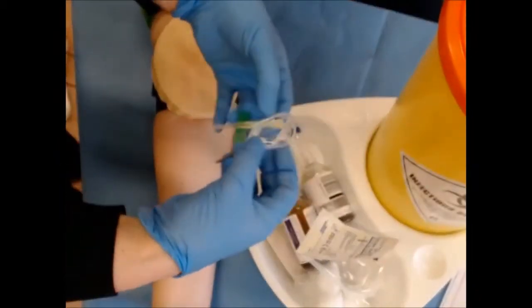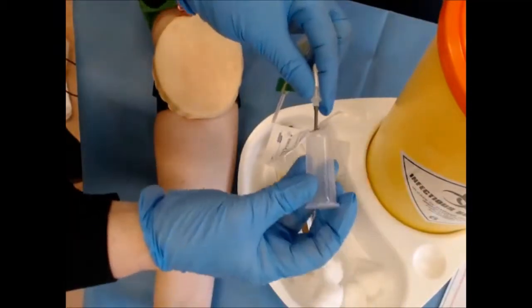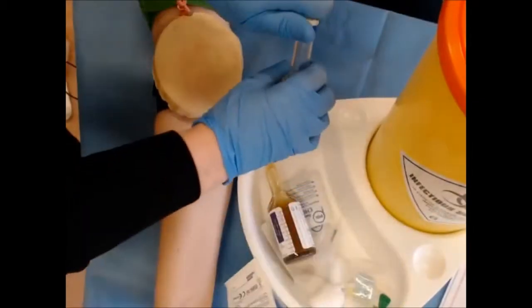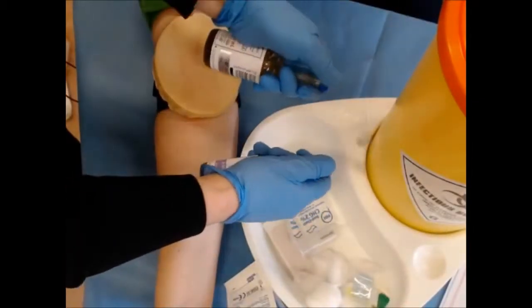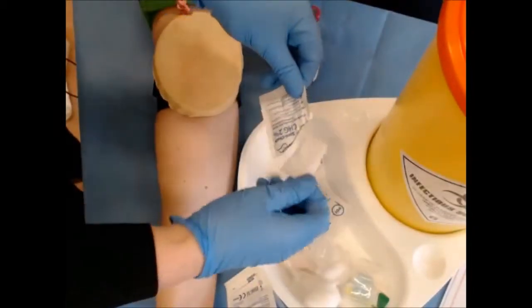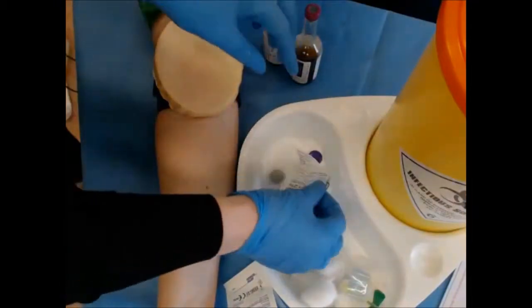So here we have the butterfly needle and the vacutainer. So open both your blood bottle samples. Take one of your chlorhexidine wipes, clean the top of it. One, two, allow 30 seconds to dry.